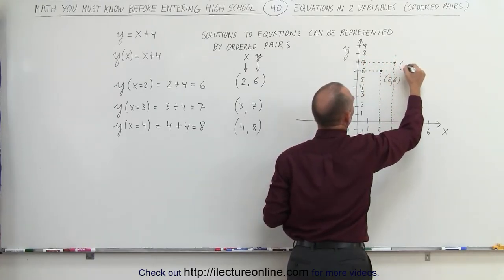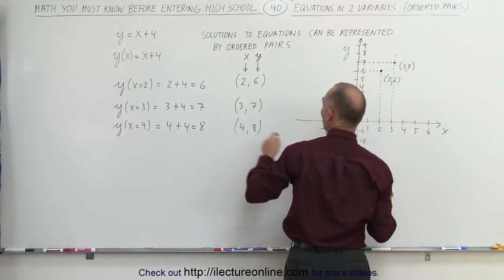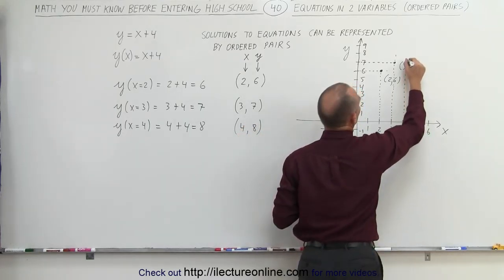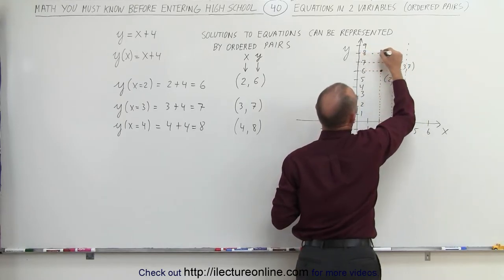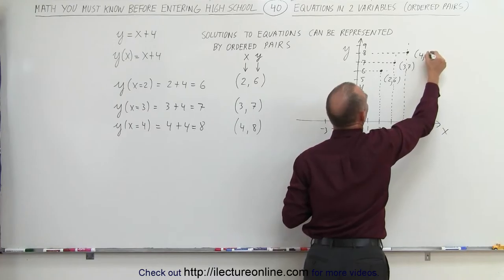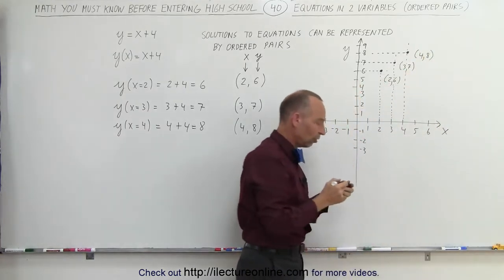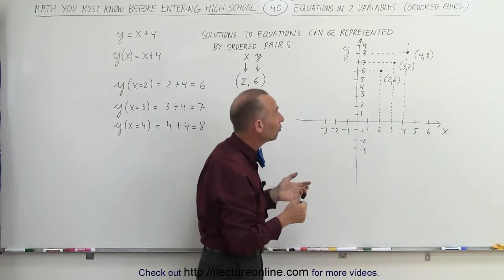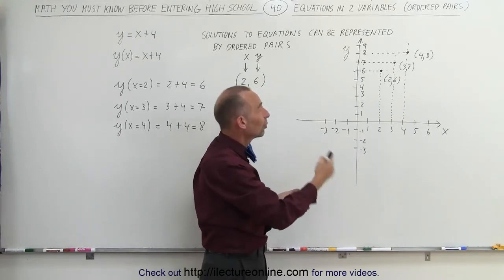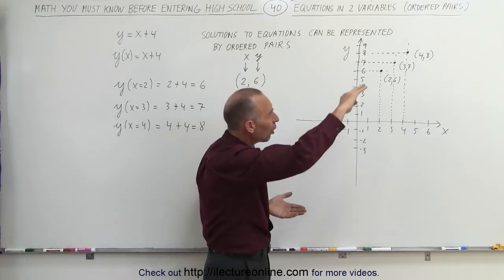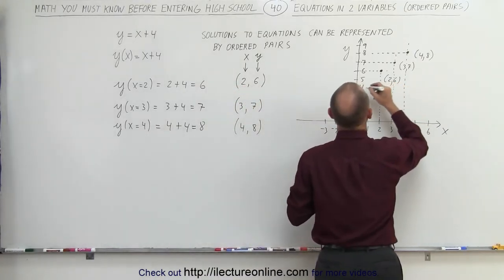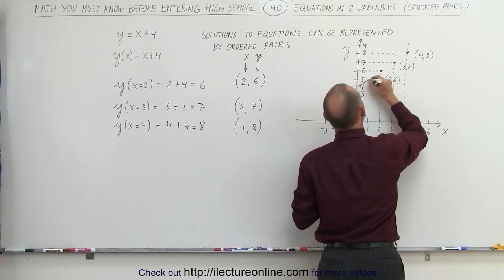And we can do it again for 4 and 8: draw the vertical line for the number 4, and a horizontal line for number 8, and where the two meet, that's where we have the ordered pair (4, 8). So you can see that those points with the ordered pairs (2, 6), (3, 7), and (4, 8) all lie on a straight line. We can actually connect those, like this.